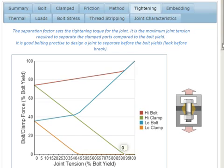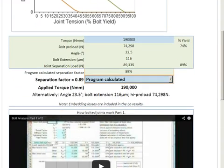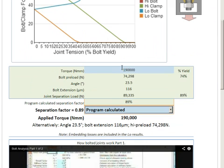Now let's have a look at some of the controls on the program here. We've got a choice here. We can apply a torque here. If we happen to know the tightening torque, then we can put a tightening torque in here.